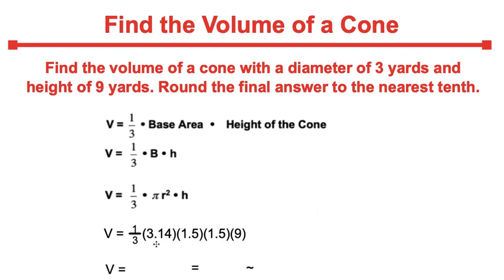So pi will be replaced for 3.14. Half of 3 yards is 1.5 which is your radius. When you square it, that means it's 1.5 times 1.5 and then times the height of the cone. So let's grab your calculator.